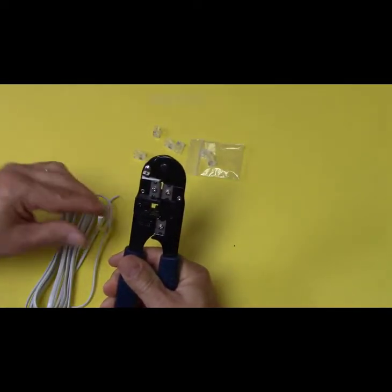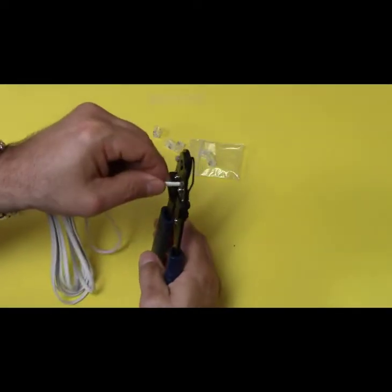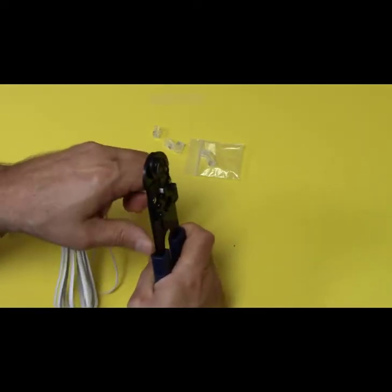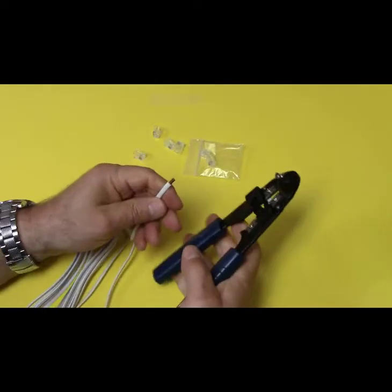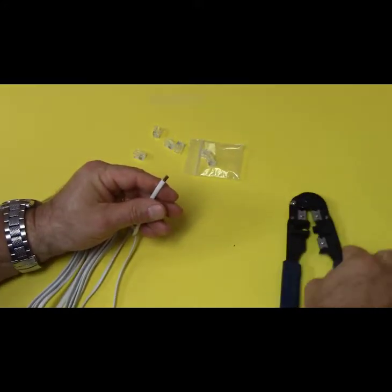They're spaced just far enough apart so all they're going to take off is that plastic outer coating. So we're going to put that in there and push it right up against the stop. We're going to squeeze and we're going to pull. And look at that, we've got four little wires sticking out now.